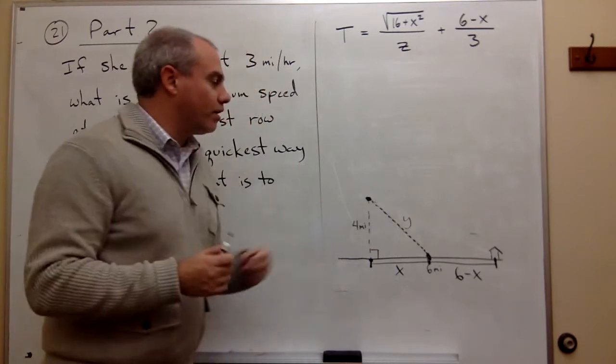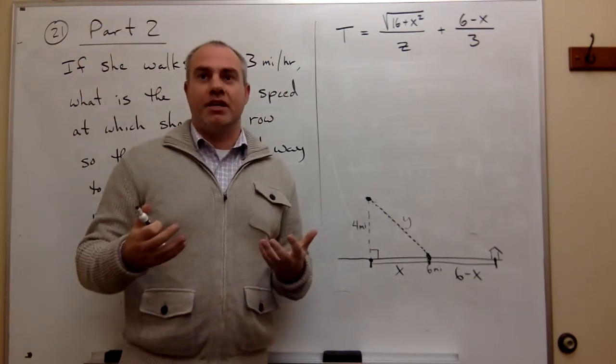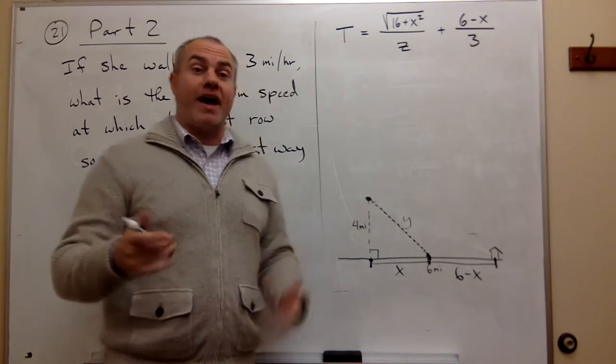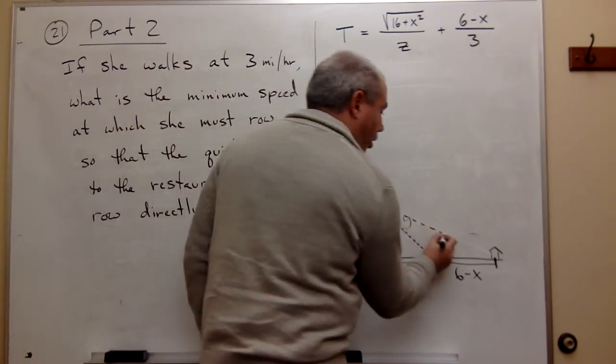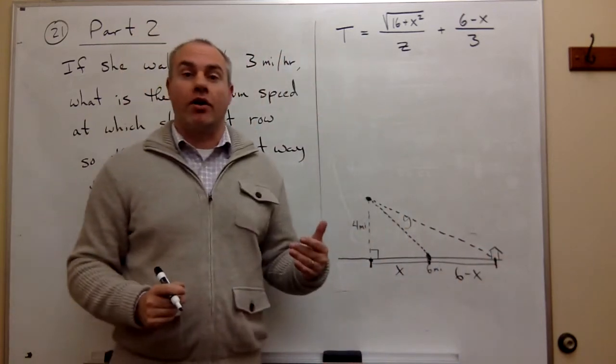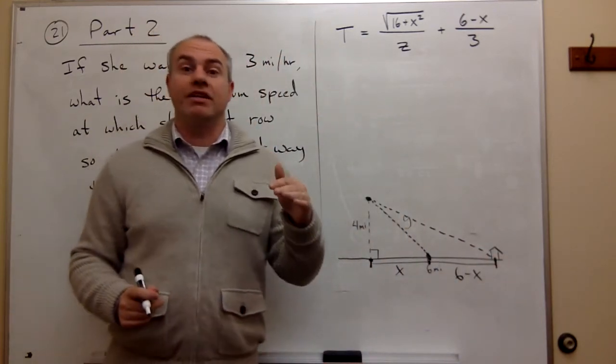When this problem is saying, well, if she rowed at a certain speed, then the optimal path would be to just row all the way to the restaurant and never walk at all. So what's the minimum speed that she would have to travel for that to be the optimal route?